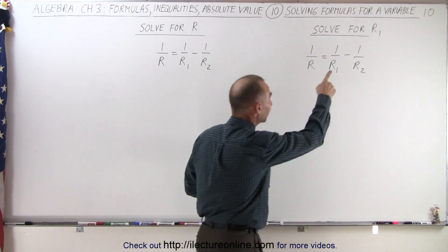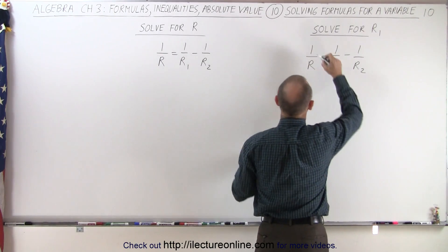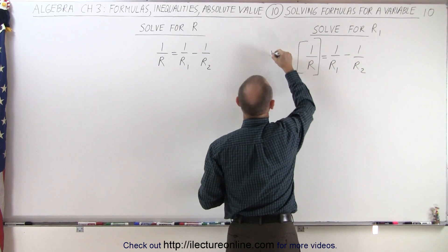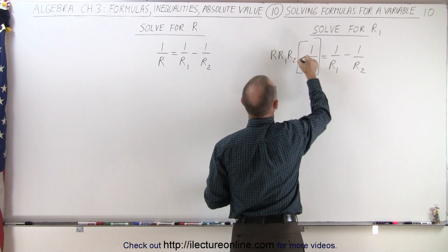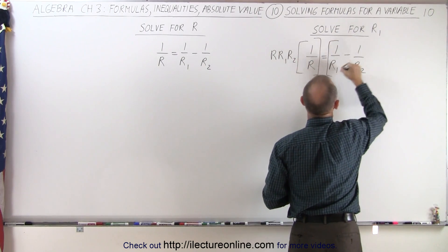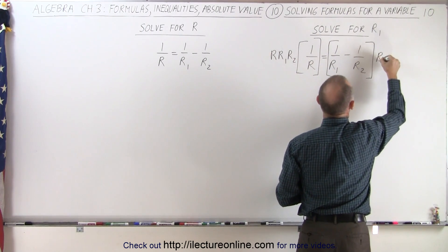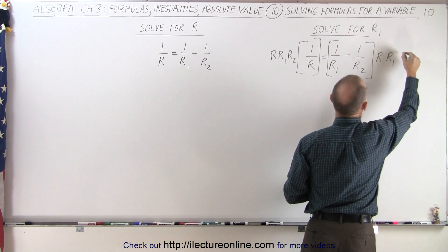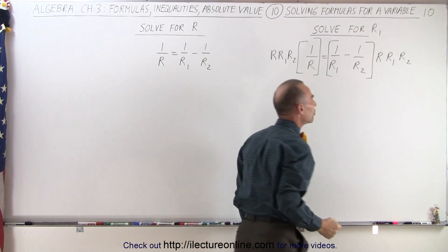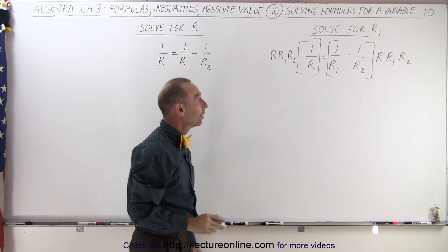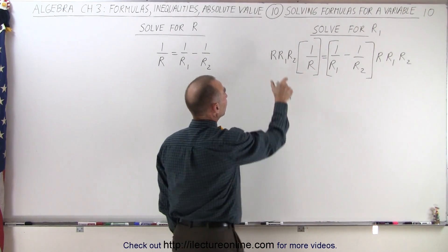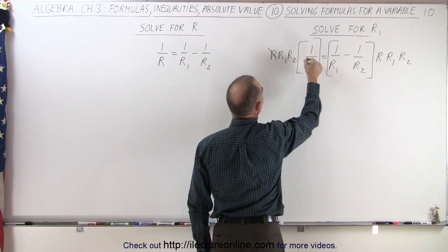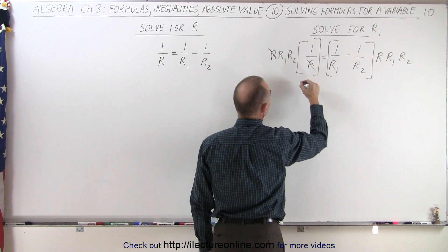Starting on the right side, solving for R1, we multiply the left side of the equation by the product of all denominators: R times R1 times R2. On the right side we do the same — R times R1 times R2. Notice when we multiply, the R's cancel out, and we're left with R1 times R2.